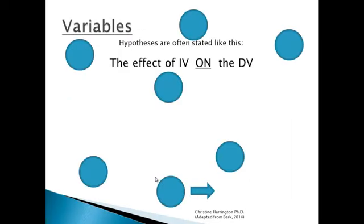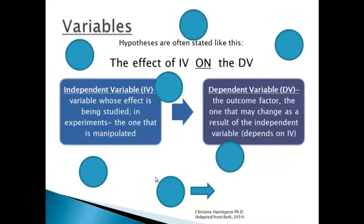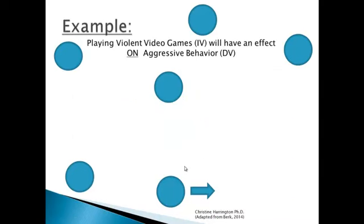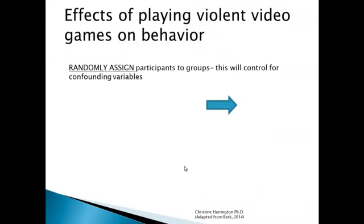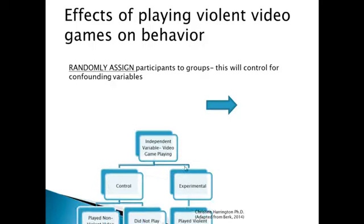The effect of the independent variable on the dependent variable is what we're looking at — that's usually how the hypothesis is stated. The independent variable is the one you're studying and manipulating, and random assignment determines which group participants go into — experimental or control. The dependent variable is the outcome variable. Confounding variables in this example would include things like parenting style, television viewing, history of aggressive behavior, and other biological or environmental factors. Randomly assigning participants to groups controls or equalizes the chance of those confounding variables appearing across all groups.